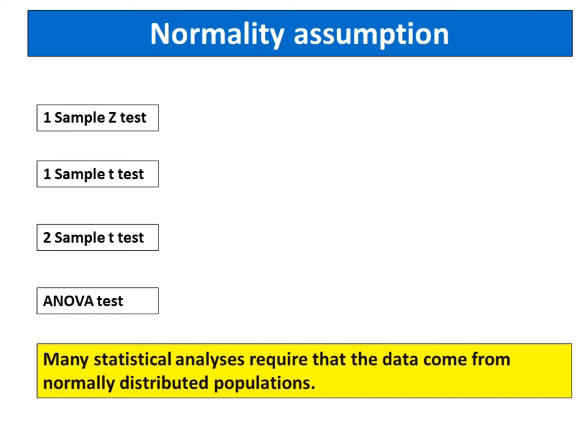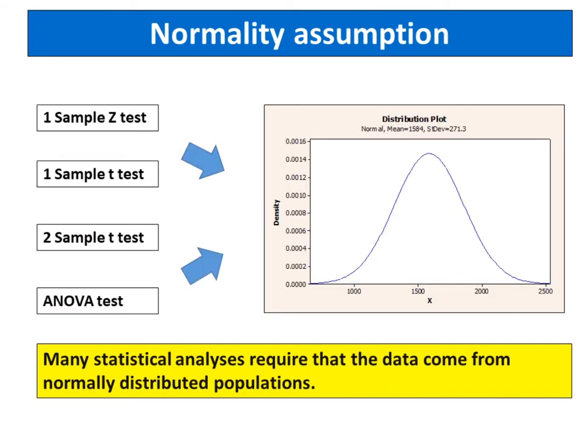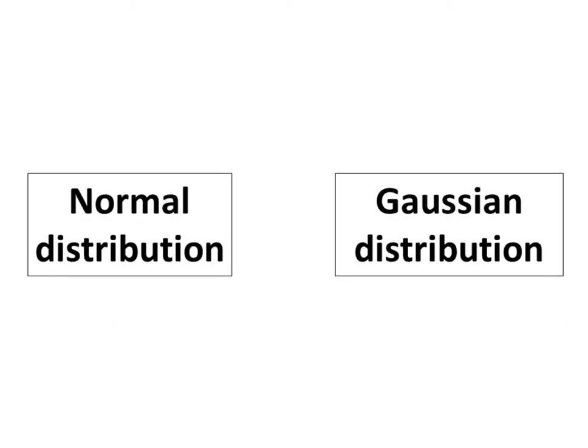Many statistical analyses require that the data come from normally distributed populations. The normal distribution is also known as the Gaussian distribution.